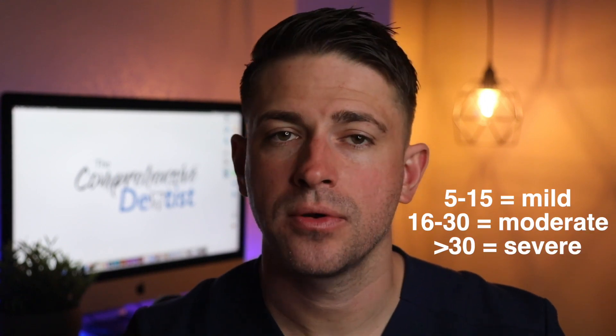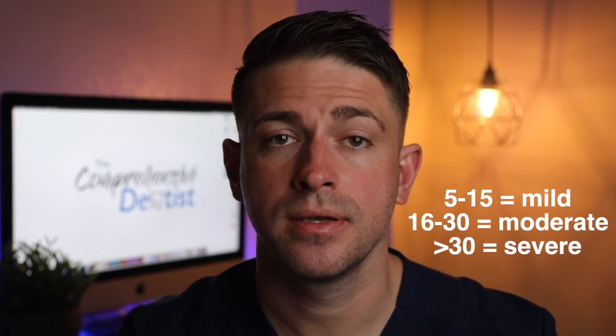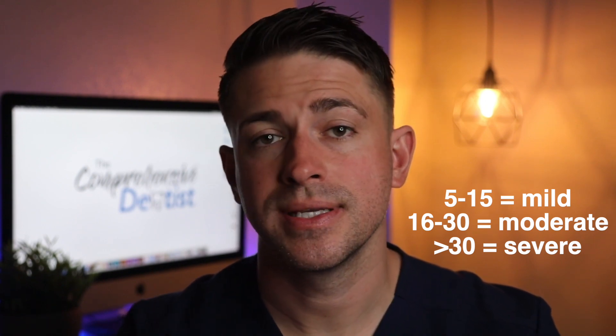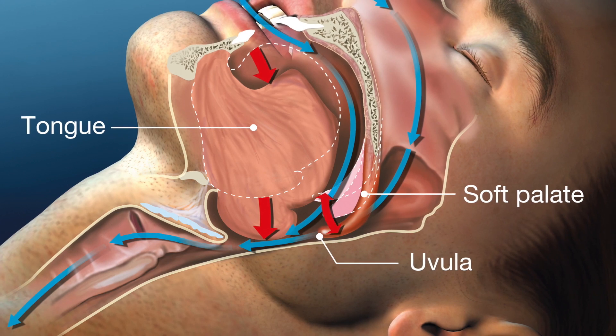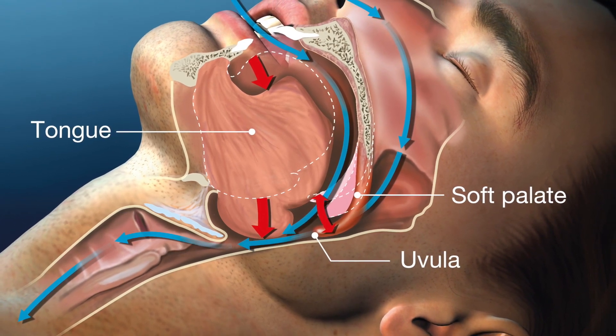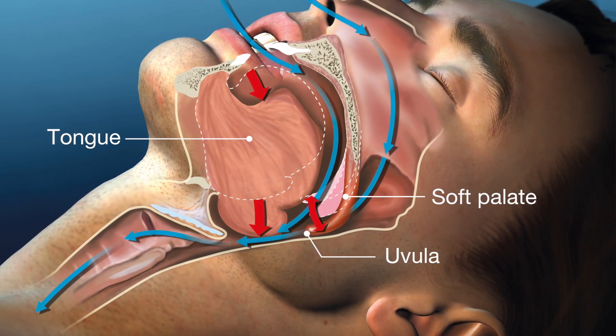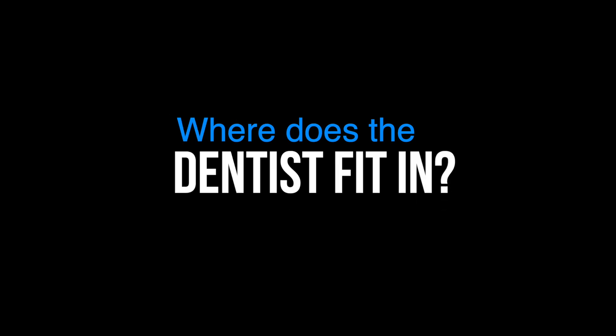If you have an AHI of 5 to 15 events per hour, this is regarded as mild sleep apnea. 16 to 30 events per hour is moderate, and greater than 30 events per hour is severe. It is suspected that a large contributor to sleep apnea is the relaxing of soft tissues and muscles surrounding the airway, including the soft palate and the tongue. As these tissues relax, the airway constricts and makes it harder to breathe. Sleep apnea is a medical disorder and it can be life-threatening if left untreated, with studies showing an increased mortality rate for all severities, especially moderate and severe forms.